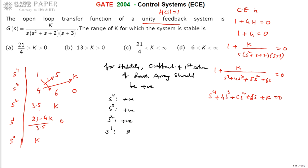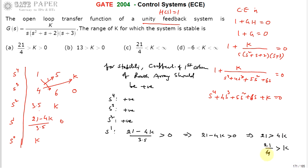For the S¹ row, the term (21 − 4K)/3.5 must be greater than 0, so 21 − 4K > 0, meaning 21 > 4K, so K < 21/4. If K is less than 21/4, the S¹ coefficient is positive; otherwise it is zero or negative.